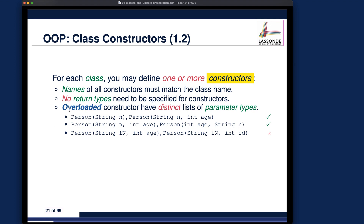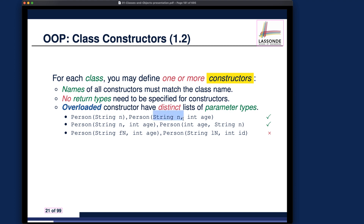We talk about method overloading. The example I give is an overloaded constructor — two different versions of constructors for the person class with distinct parameter lists. One takes a string; the other takes a string and an integer. Another example: string+integer vs. integer+string is fine. But if you have two constructors both with string and integer, that causes ambiguity to the compiler and it will not compile. You can review and try this on Eclipse.